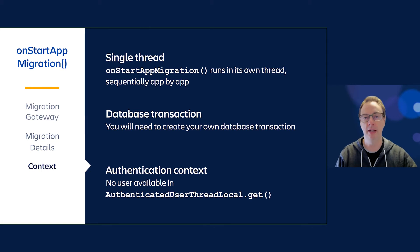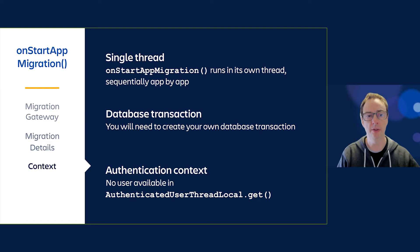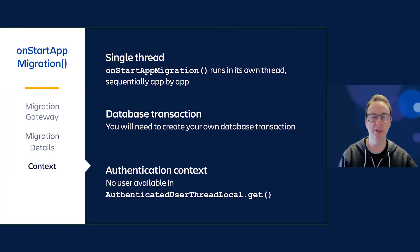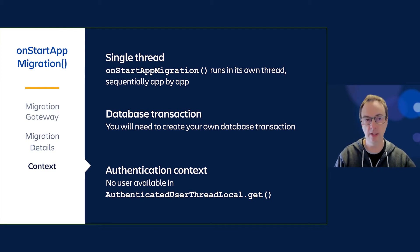Also understand that since it runs in its own thread, no user is available in AuthenticatedUserThreadLocal.get(). This means if you access any services within Jira and Confluence that require an administrative user or a specific user, you don't have access to that user — so you need to create and construct your own authenticated user object.